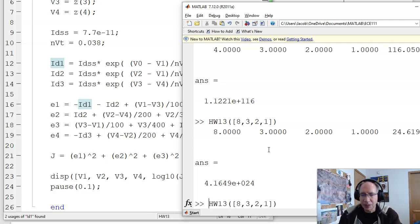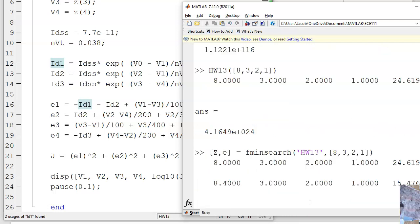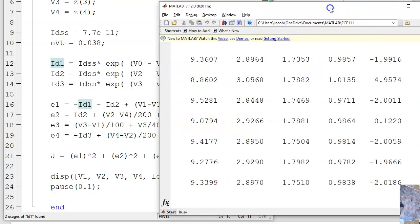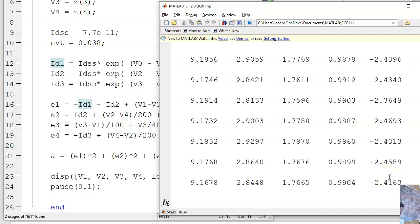Or, there's a function called fminSearch. I'm going to tell it, minimize this function. Here's my initial guess. And it runs. It's trying to figure out what the voltages are. The last column is kind of what I care about. That's the log base 10 to the error.